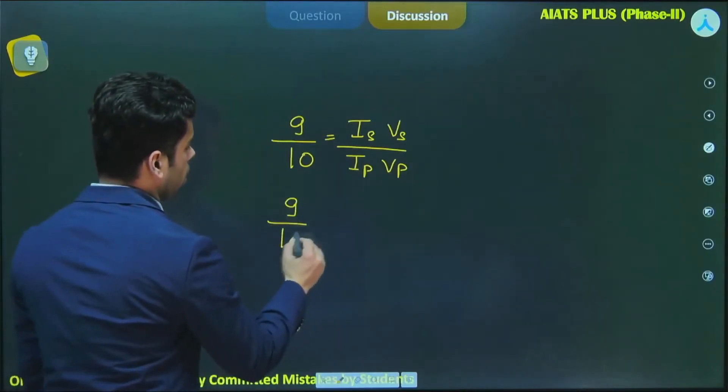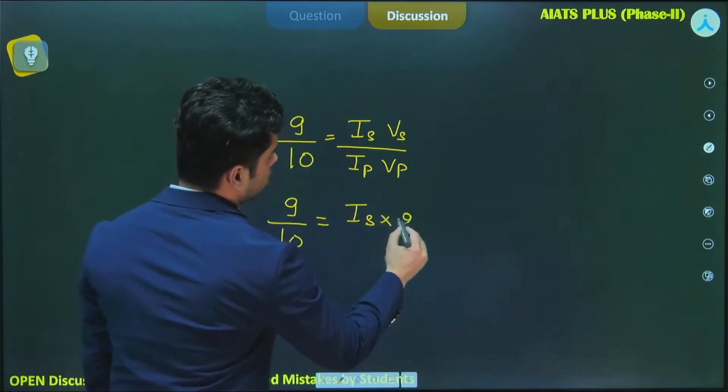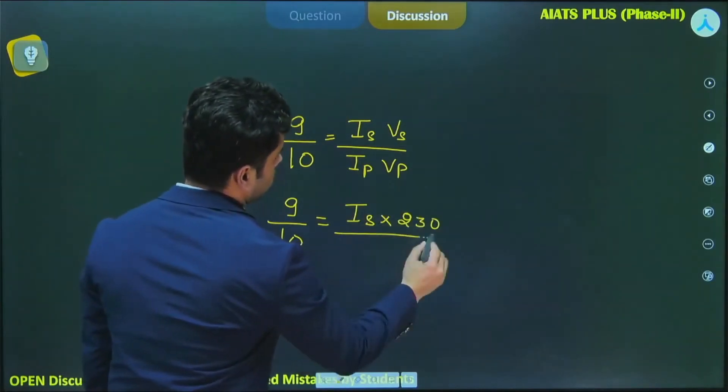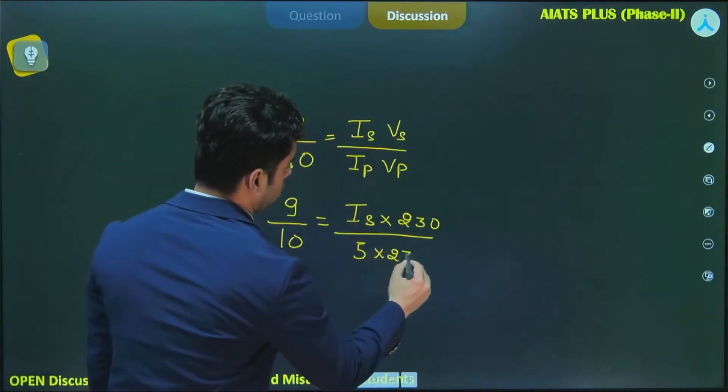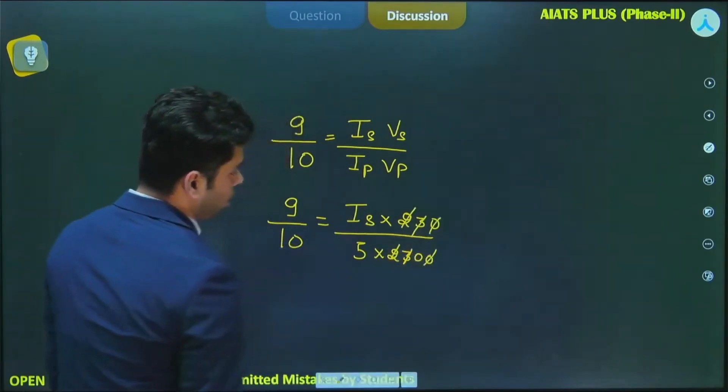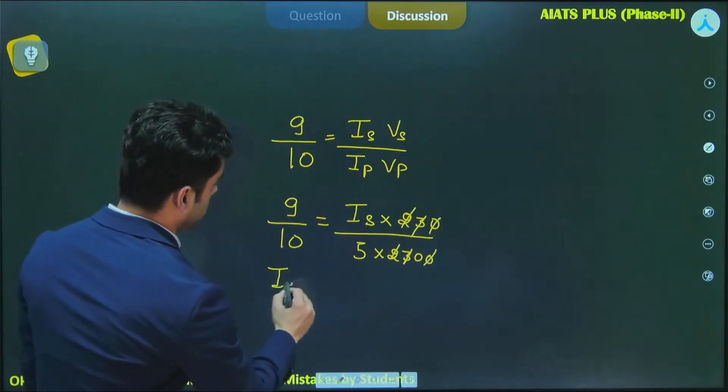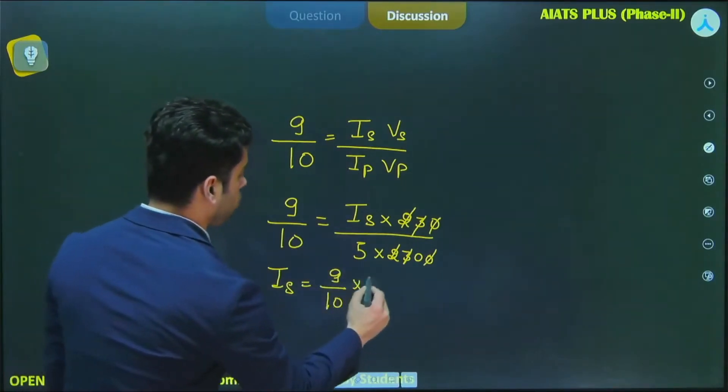So I can put the data: 9 by 10 equals Is, which is what I'm required to find, and Vs is 230, Ip is 5 ampere, and Vp is 2300. Let me cancel this, so 110 over here, so it becomes Is equals 9 by 10 into 50, which is coming out to be equal to 45 amperes.